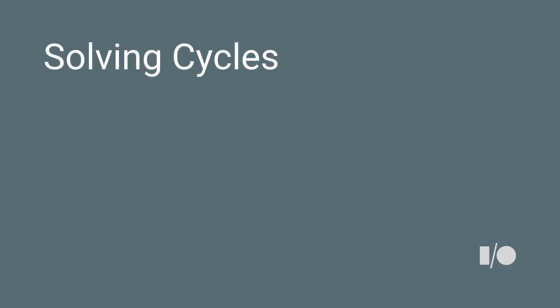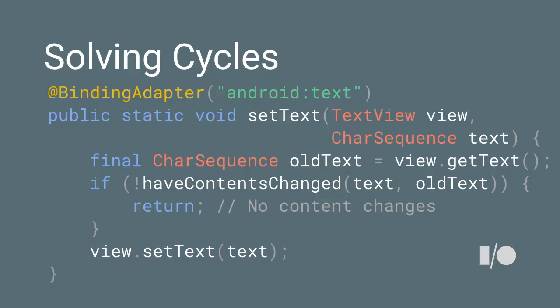Let's solve it — once and for all. Well, unfortunately not universally, but you can solve it. We solve it for all the ones we've implemented: you just have a check in the binding adapter that says, when you set the text field, check the previous value and make sure it hasn't changed. If it has changed, set it; if it hasn't changed, don't set it. That breaks the cycle before we get an infinite loop.